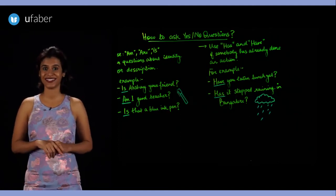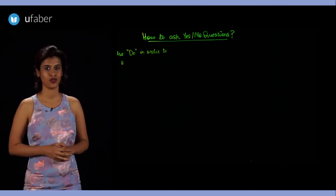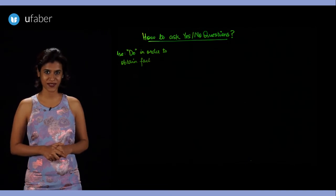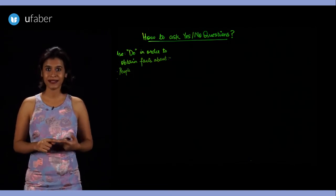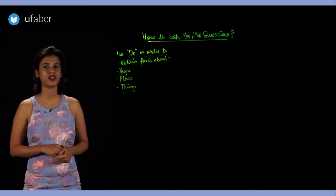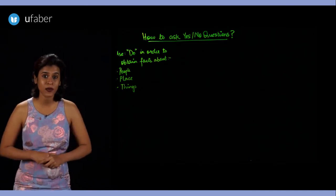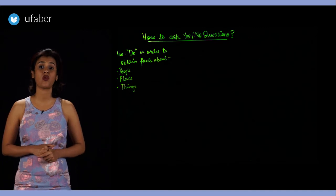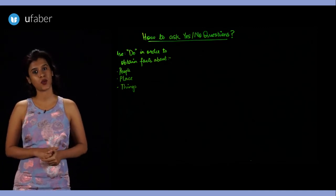The third rule tells us to use the word do to ask yes or no questions in order to obtain facts about people, places, and even things. Now remember that this rule is different from rule one, because in rule one we are asking questions to know the description or identity, whereas here we ask questions to obtain facts.